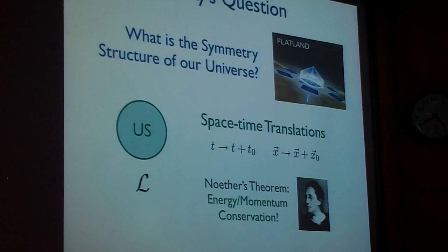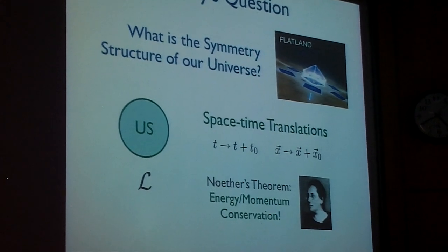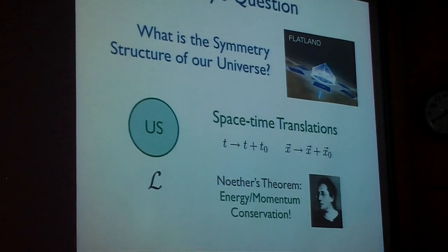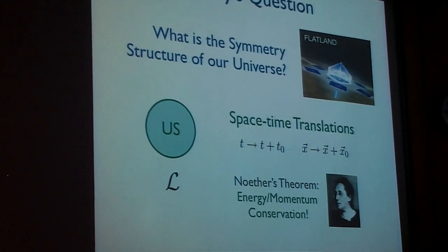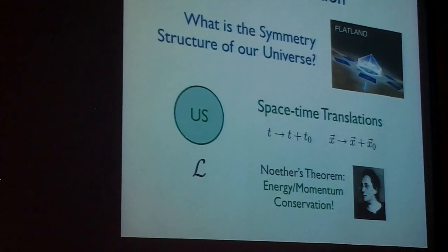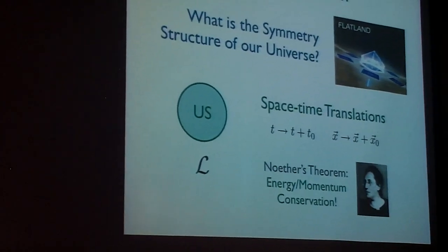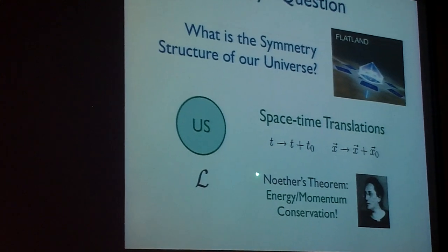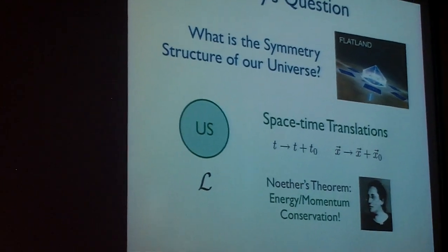And the reason why this is such a profound statement is because we know from Noether's theorem that if you have a symmetry, it comes along with a conservation law. And one of the first things we learn in a physics class at Brown is that energy and momentum are very good conserved quantities in our universe—energy coming from time translations, momentum conservation coming from space translations.